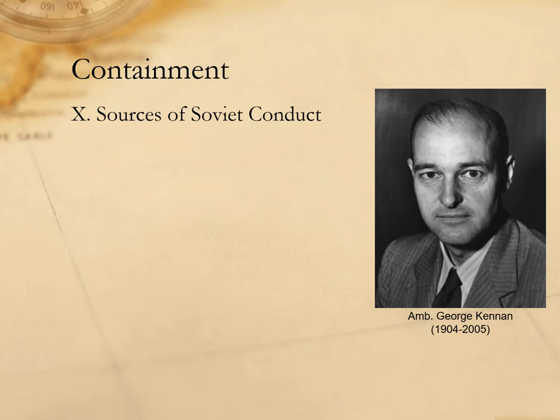Kennan's containment had three broad goals, each supported by a specific technique. First, it sought the re-establishment of a balance of power to maintain international peace. Kennan believed that the ultimate goal of US foreign policy should not be the division of the world into American and Soviet spheres of influence, but rather the promotion of independent centers of power in Europe and Asia. Such independent power centers would provide natural checks on Soviet expansion, achieved by encouraging self-confidence in nations threatened by Soviet expansion.